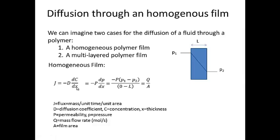Now, it turns out that for polymer permeability, we can rewrite this equation as negative P — capital P — the permeability of the polymer, which is related to the diffusion coefficient, times the pressure gradient dp/dx. If I convert the pressure gradient into actual values, we get negative P, the permeability, times the difference in the internal pressure minus the outside pressure, divided by zero minus the thickness of the polymer. The negative signs cancel, and we get P times (P1 minus P2) over L, and that's equal to the mass flow rate divided by the area.